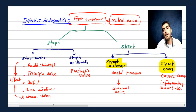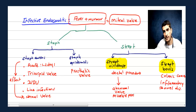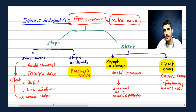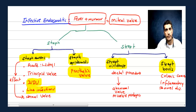Strep viridans is usually after dental procedures; the patient's past medical history shows something like mitral valve prolapse. Strep bovis is associated with colonic cancer — past medical history. Staph epi is associated with prosthetic valve — patient had a prosthetic valve maybe one month ago. Staph aureus is most common with IV drug abusers or line infections.